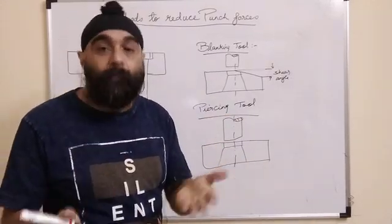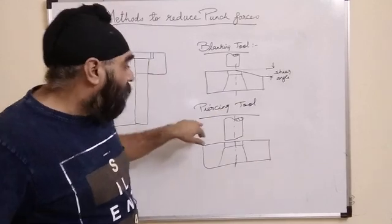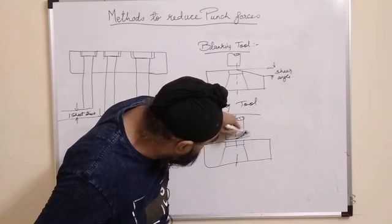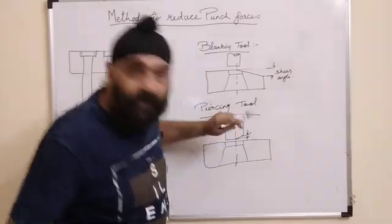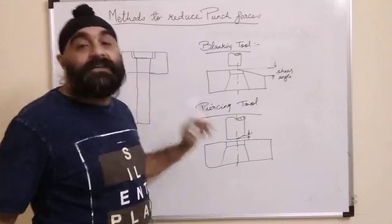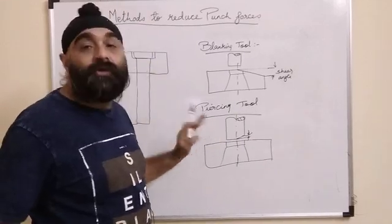If you are going for a piercing tool, the shear angle is given to the punch. Remember, for piercing the shear angle has to be given to the punch and not on the die.